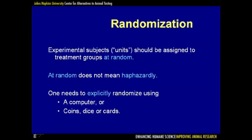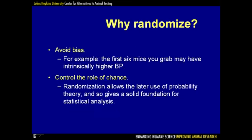The fourth principle is randomization. The experimental subjects should be assigned to the treatment groups at random — and by random, I do not mean haphazardly. Rather, one should use explicit randomization, either with a computer or with coins, dice, or cards. The principal reason to randomize is to avoid bias. If the first six mice we grab from the cage we assign to the treatment group and the next six to the control group, this may bias our estimate, as the first six mice may have intrinsically higher blood pressure.